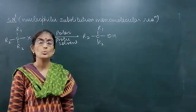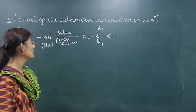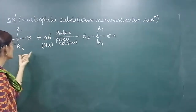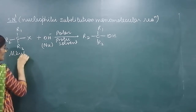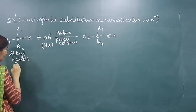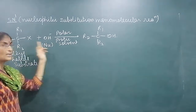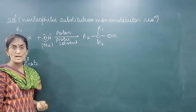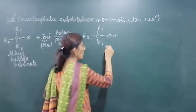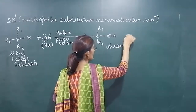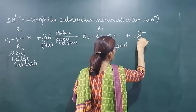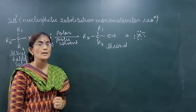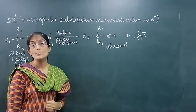Good morning students. Now we'll do mechanism SN1 and SN2. What is SN1? It is nucleophilic substitution monomolecular reaction. Suppose we have an alkyl halide — it is also called substrate. If you react it with nucleophile OH minus, it has a pair of electrons and a negative charge, it is called nucleophile. In polar protic solvent, the product is obtained as alcohol and halogen will be removed as halide ion X minus with its electron pair. This reaction is called nucleophilic substitution monomolecular reaction, SN1.